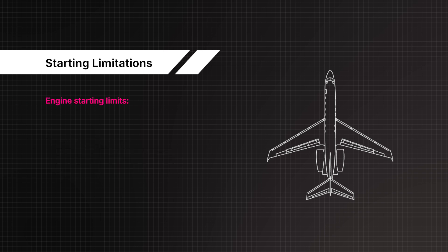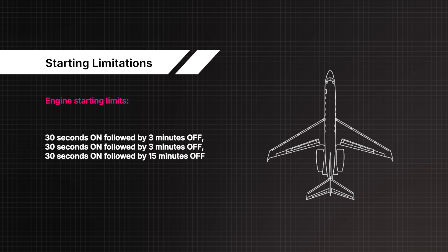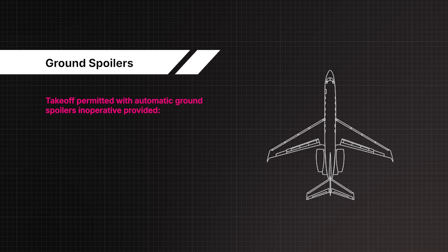Engine starting limits: 30 seconds on, followed by 3 minutes off; 30 seconds on, followed by 3 minutes off; 30 seconds on, followed by 15 minutes off. Take-off is permitted with automatic ground spoilers inoperative provided: anti-skid is operative and 20-degree flaps are used.